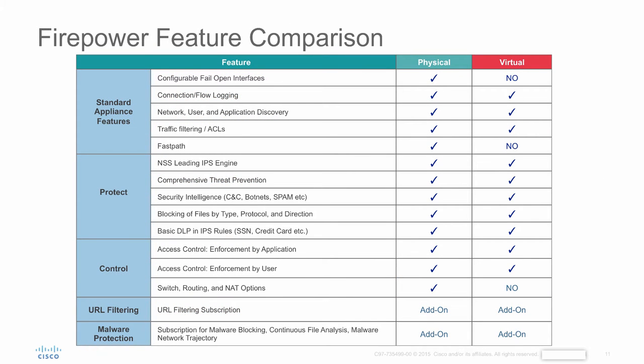When we look at the firepower appliances, physical or virtual, today we support VMware hypervisor for the virtual sensor. Here's a comparison of features between the two appliances. On the virtual, we don't have fail open interfaces for obvious reasons. The fast path is not there because it is a virtual one, and switch routing and NAT options are not supported on the virtual appliance itself.